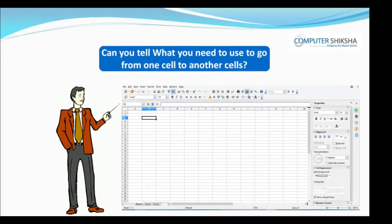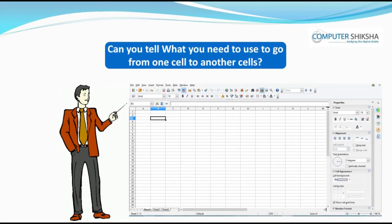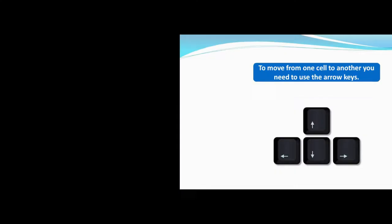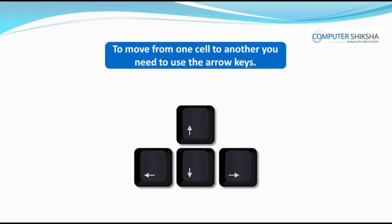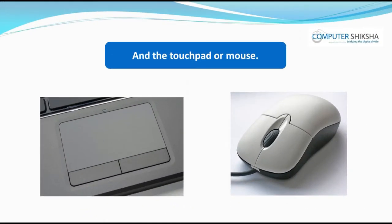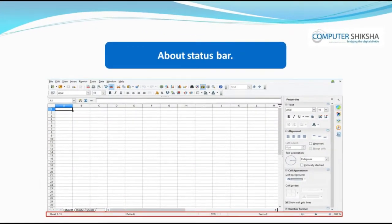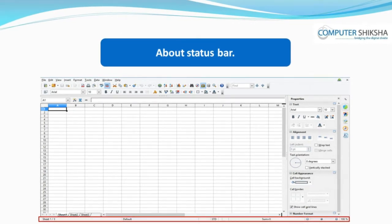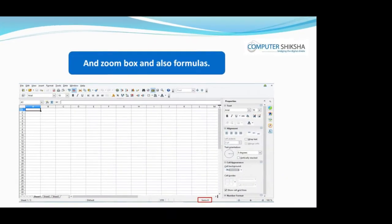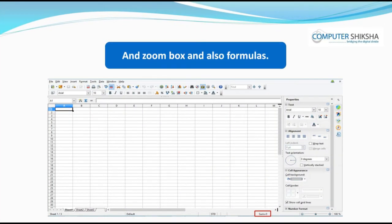Can you tell what you need to use to go from one cell to another cell? To move from one cell to another, you need to use the arrow keys and the touchpad or mouse. Which options can you see in the status bar? In the status bar, we can see the sheets and zoom box and also formulas.